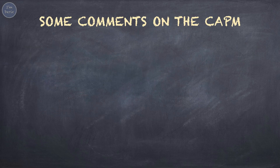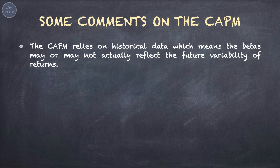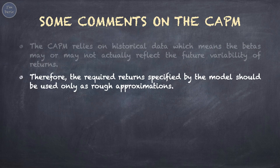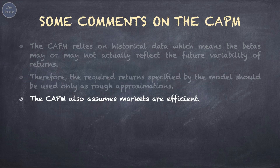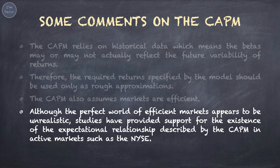Here are some comments on the CAPM. The CAPM relies on historical data, which means the betas may or may not actually reflect the future variability of returns. Therefore, the required returns specified by the model should be used only as rough approximations. The CAPM also assumes markets are efficient. Although the perfect world of efficient markets appears to be unrealistic, studies have provided support for the existence of the expectational relationship described by the CAPM in active markets such as the New York Stock Exchange, NYSE.